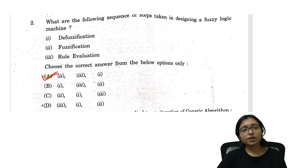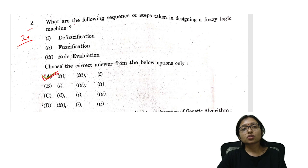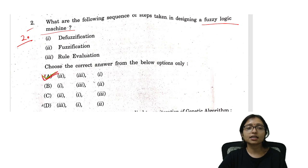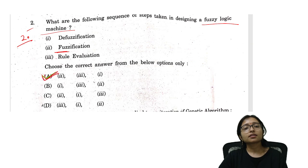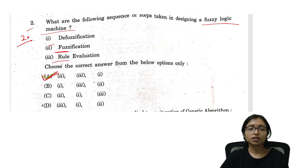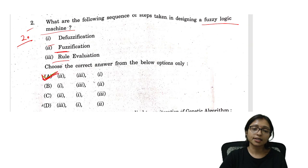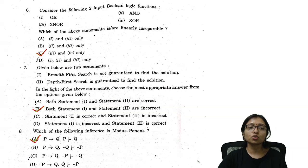Now moving to AI questions. Question 2: The sequence of fuzzy logic machine steps — first fuzzification, then rule evaluation, then defuzzification. Option A is the correct answer for question 2.